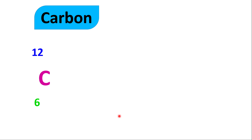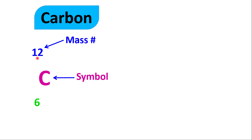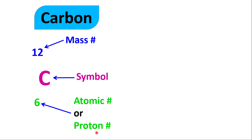Now, elements. You will notice within a periodic table you will see structures like this. There will be a name — the example here is carbon — and we have the symbol for carbon, which is C. We have two numbers: a larger number, which is 12 in this case, and that is considered to be the mass number. And we have a smaller number, which is considered to be the atomic number or the proton number. Some periodic tables can be different — some will put the mass at the bottom and the atomic number at the top — but the larger number is always the mass number and the smaller number is the atomic number, which is the same thing as the number of protons.